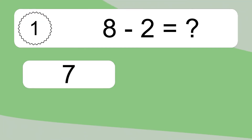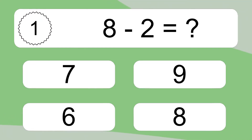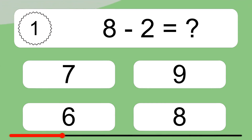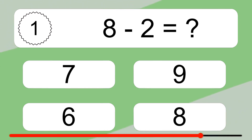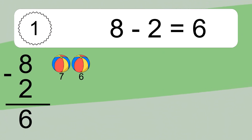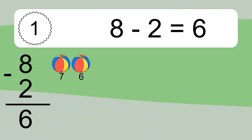8 minus 2 equals what? 8 minus 2 equals 6. Let's count it: 7, 6.